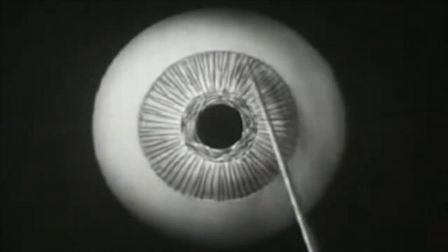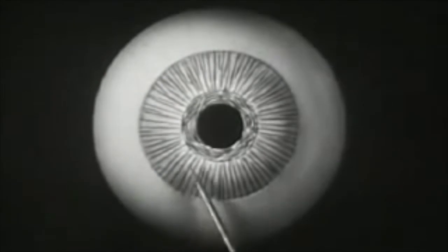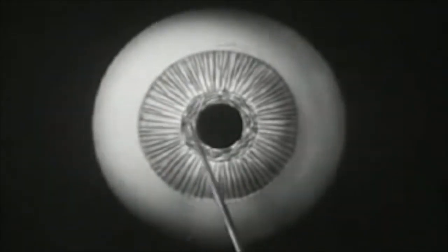Its action is caused by two sets of delicate muscle fibers within the iris itself. These muscles are shown here in simplified diagram. These spoke-like radial fibers pull the pupil open. This ring-shaped muscle around the pupil closes it.